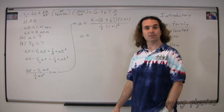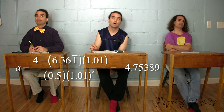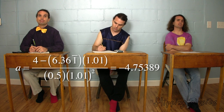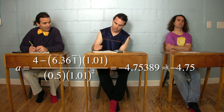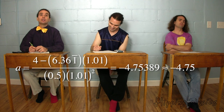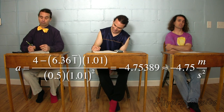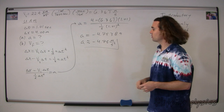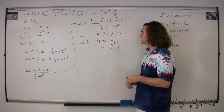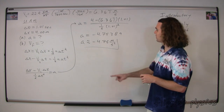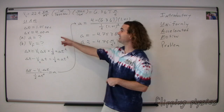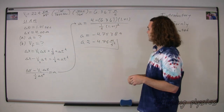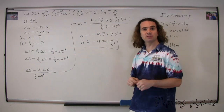Now that we have all of our numbers, we can simply plug those in. Bo, what do we get for an answer? Negative 4.75389, or with three significant figures, negative 4.75 meters per second squared. So for Part A, we get negative 4.75 meters per second squared, rounded to three sig figs because the least number of significant digits from our givens was three.